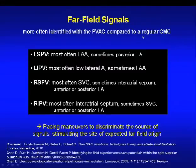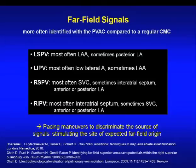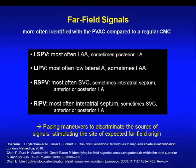Far-field signals may be identified more often on the PVAC compared to a regular lasso catheter, due to its specific electrode configuration. Far-field signals originate from specific areas depending on which PV you are targeting: on the left side, most often the left atrial appendage; on the right side, either the SVC or the low left atrium for the right inferior PV. Pacing maneuvers are needed to discriminate the source of these signals.